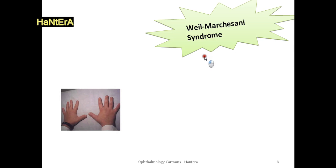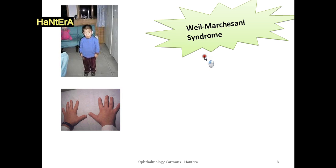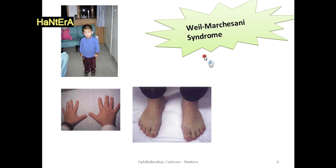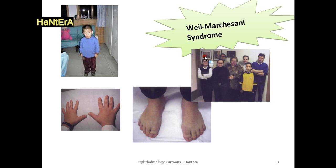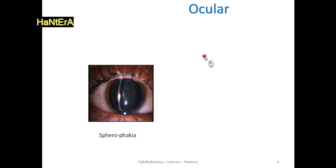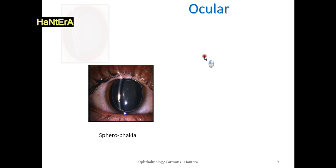Weill-Marchesani syndrome is characterized by brachydactyly, reduced growth, athletic build with abundant subcutaneous tissue, short neck and large thorax, short and clumsy hands and feet, decreased joint flexibility, hearing defects. It is an inheritable connective tissue disorder, usually inherited as autosomal recessive. Its lens is characterized by spherophakia beside ectopia lentis.